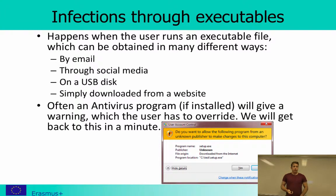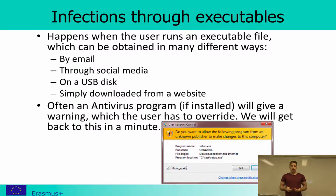Then you have infections through executables — executable files that you are downloading or getting in different ways. It can be by email, through social media, on a USB disk, or simply downloaded from a website. Often, if you have an antivirus program installed, it will give you a warning, but the problem with this kind of warning is that users tend to overwrite them, also because the information they receive is not sufficient for them to make a decision.